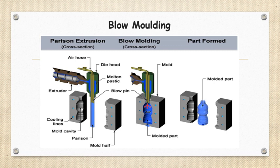These mold cavities will be the same cavities for the component we are preparing. Suppose we are going to prepare a bottle shape — we will use the cavities of bottle shape. In these cavities we are going to place this parison, and through this air hose we are going to enter hot air into the parison.